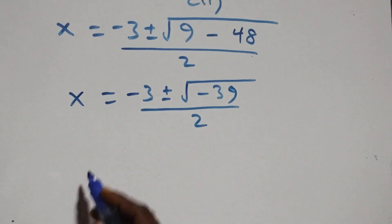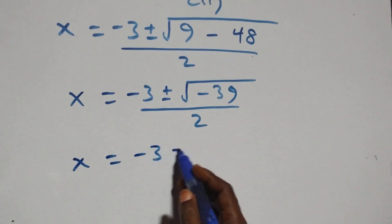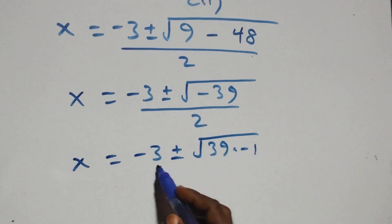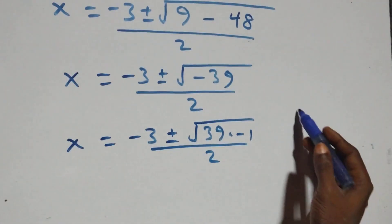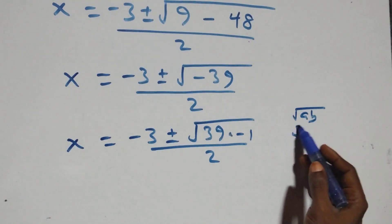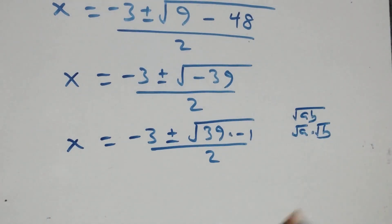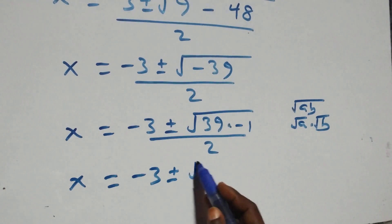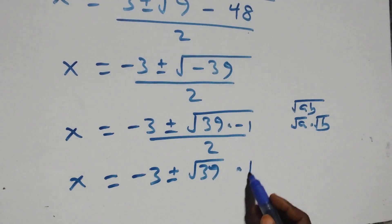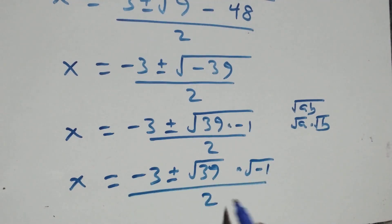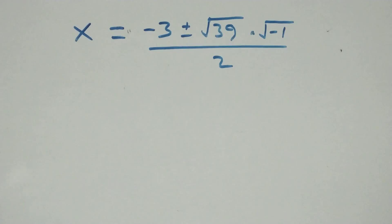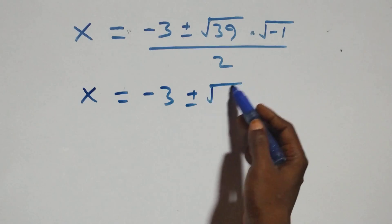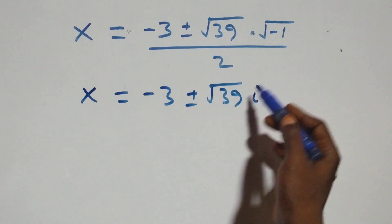So x equals to minus 3 plus or minus square root of minus 39, over 2. We write this as square root of 39 times minus 1, and since we can separate root(a·b) as root(a) times root(b), this becomes minus 3 plus or minus root(39) times root(minus 1), all over 2. Since root of minus 1 is i, we get x equals to minus 3 plus or minus root(39)·i, over 2.